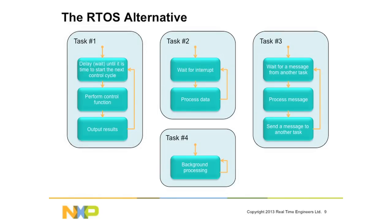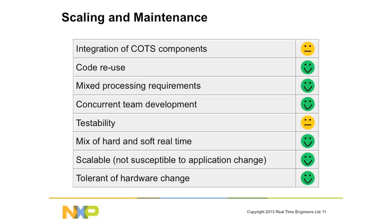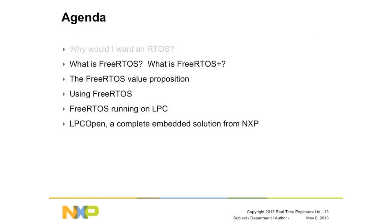You can change the speed of the hardware and it won't make a difference. You can add more code into the background task as functionality grows, and it won't affect higher-priority tasks. It's much more maintainable because you're relying on the kernel for all your signalling, timing and communication, leaving you with autonomous, functionally cohesive tasks each executing one specific piece of functionality. Things like hardware tolerance and code reuse become much easier.